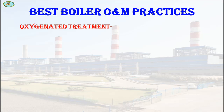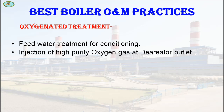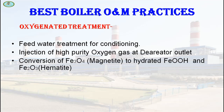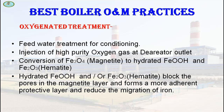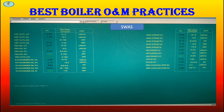Next one is oxygenated treatment. Feed water treatment is done for conditioning via injection of high purity oxygen gas at the deaerator outlet. This causes conversion of magnetite to hydrated ferrous hydroxide and hematite, forming a more adherent protective layer in the magnetite layer, reducing the migration of iron and preventing flow-accelerated corrosion. Regular monitoring of parameters should be done and corrective action taken if any deviation is found.